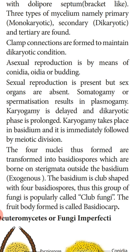Asexual reproduction in Basidiomycetes takes place by means of conidia, oidia, or budding — methods already studied as general asexual reproduction methods common to fungi.